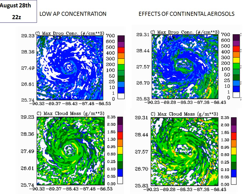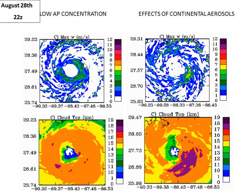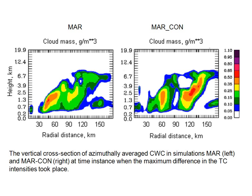Here you can see fields of maximum vertical velocity and cloud top height in the case of low aerosol concentration versus when continental aerosol effects are taken into account. Again, in the area of larger aerosol concentration, we have stronger convection and stronger updrafts, and also higher cloud top heights when continental aerosol penetration into the tropical cyclone is considered.